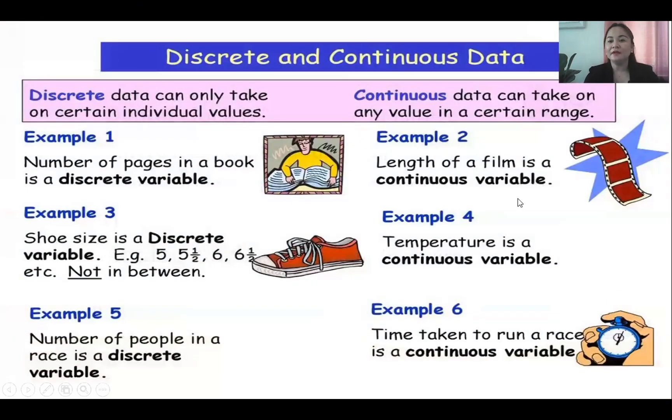Other examples of discrete and continuous data. Discrete data can only take certain individual values. Example: number of pages in a textbook. Shoe size is discrete. Number of people in a race is discrete.